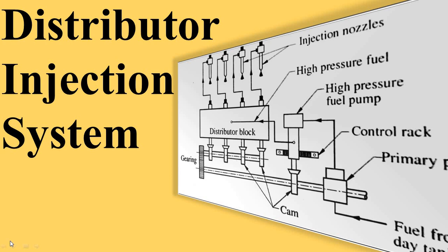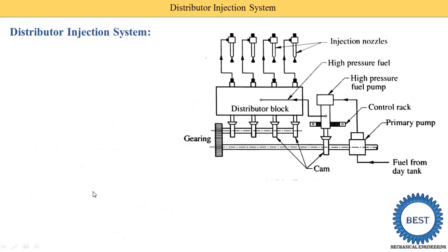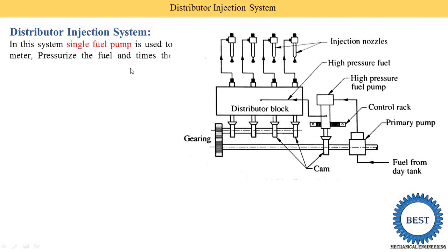In this video I discuss the distributor injection system for a diesel engine. Here you can see the diagram of the distributor injection system. In this system, a single fuel pump is used, and its functions are to meter the quantity of fuel supply, pressurize the fuel, and time the injections.